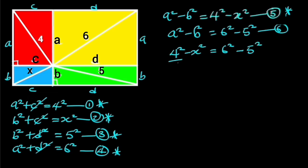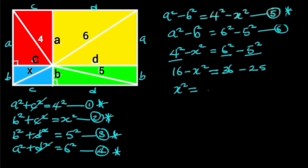4 squared is 16, 6 squared is 36, and 5 squared is 25. So we have: 16 minus X squared is equal to 36 minus 25. Collecting like terms will give us: X squared is equal to 16 minus 36 plus 25. This will give us 5.